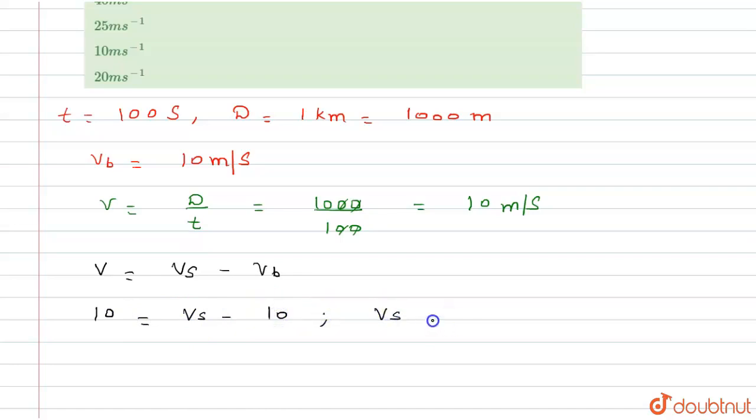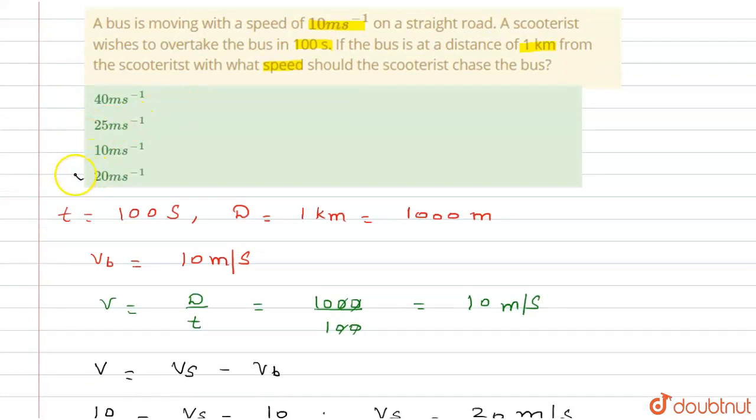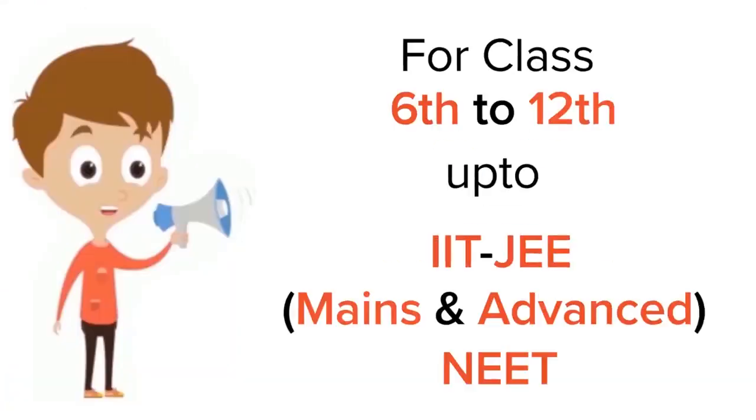The velocity with which the scooterist should chase the bus is 20 meter per second. Now check the options, so the fourth option is correct. Thank you.